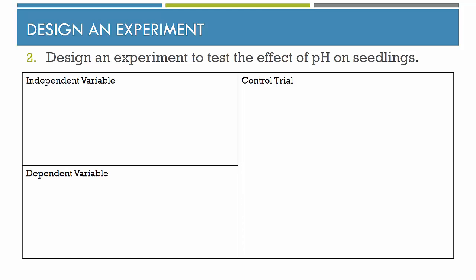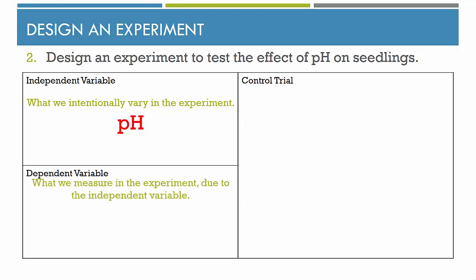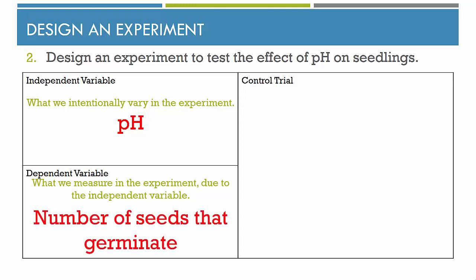The next question asks us to design an experiment to test the effect of pH on seedlings. The independent variable is what we intentionally vary or change in the experiment — for this experiment, that would be pH. The dependent variable is what we are measuring that has changed because of the independent variable. For this experiment, that's going to be the number of seeds that germinate. We could also measure the height that the plants grow to, or growth rate — there are lots of ways we can determine the effect of pH on seedlings.